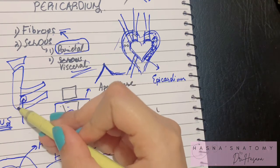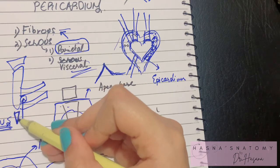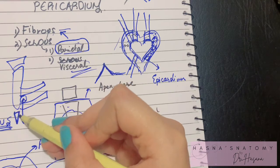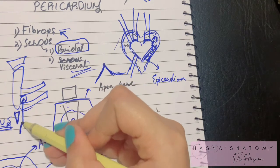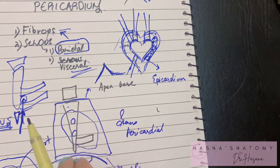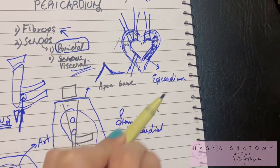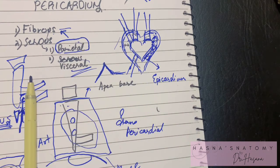Alternatively, pericardiocentesis can be performed at the xiphicostal angle — the angle between the xiphoid process and the costal margin on the left side. The needle's position should be directed upwards, backwards, and towards the left. That was all about the pericardium; I really hope you got the concept, thank you so much for watching.